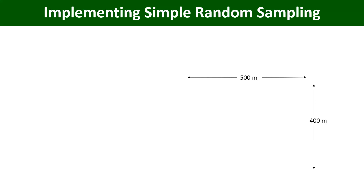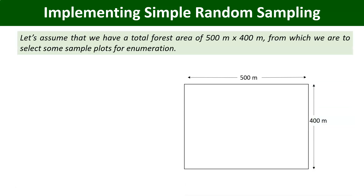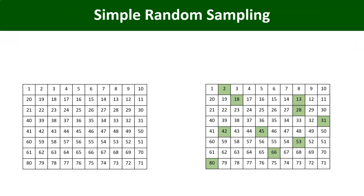Let's see how we implement it. Assume we have a total forest area of 500 meters by 400 meters from which we are to select some sample plots for enumeration. This is a rectangular forest block of 500 by 400 meters. We cannot do 100 percent enumeration by measuring every single tree, so we want to select some samples to measure. We assume the area is homogeneous — that is the condition for implementing simple random sampling.